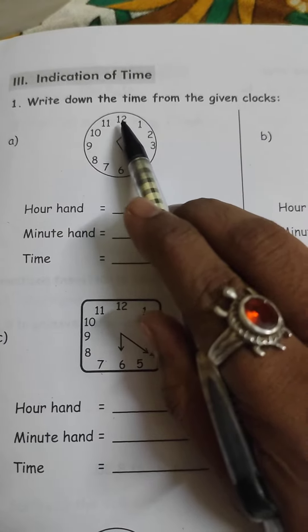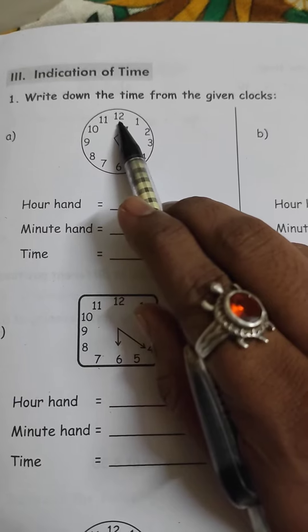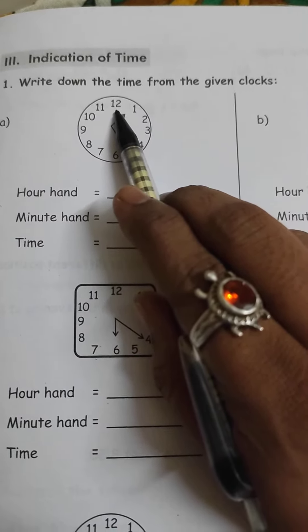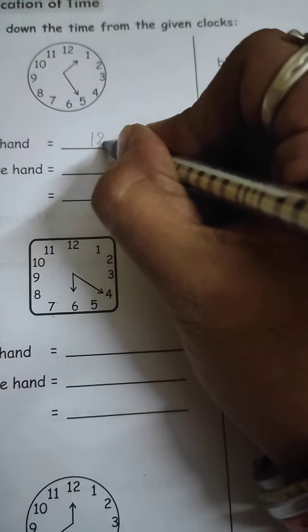The short hand is positioned between the 12 and 1, so you have to mention the number before, which is 12. The hour hand is indicating 12.